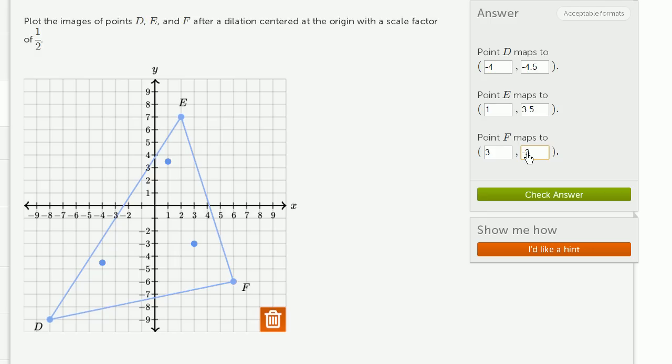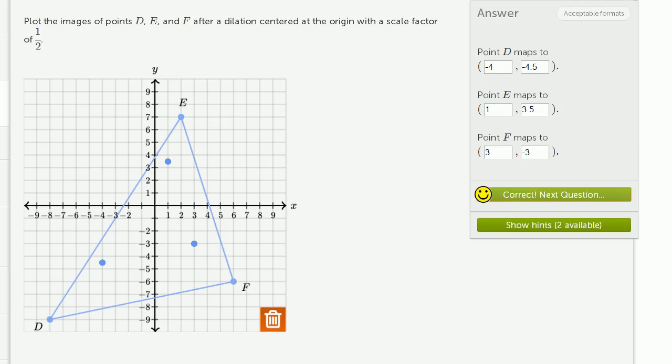So the important thing to recognize is the center of our dilation was the origin. So in each dimension, the x direction or the y direction, we just halved the distance from the origin, because the scale factor was 1/2. We got it right.